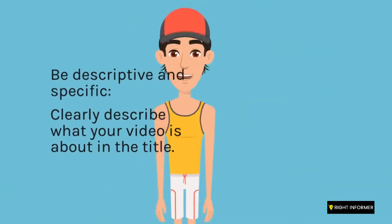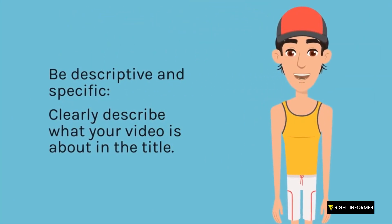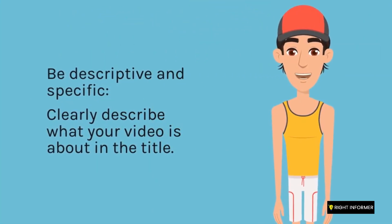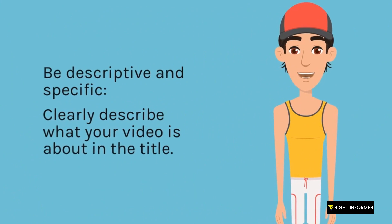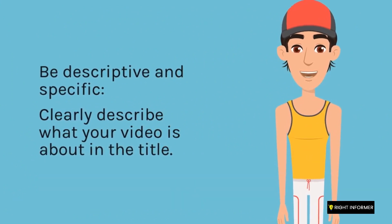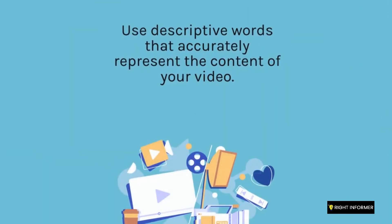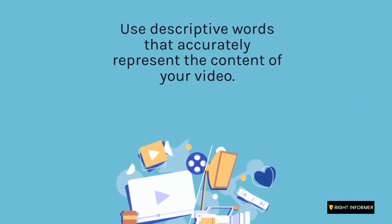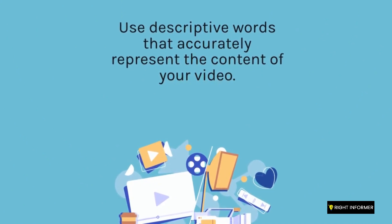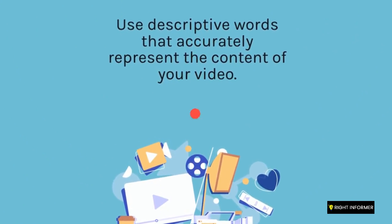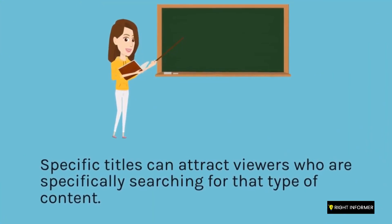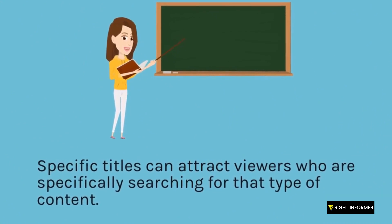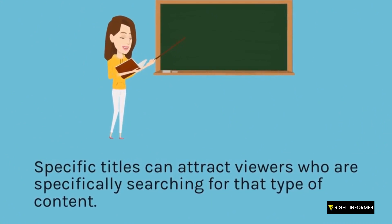Be descriptive and specific. Clearly describe what your video is about in the title. Use descriptive words that accurately represent the content of your video. Specific titles can attract viewers who are specifically searching for that type of content.